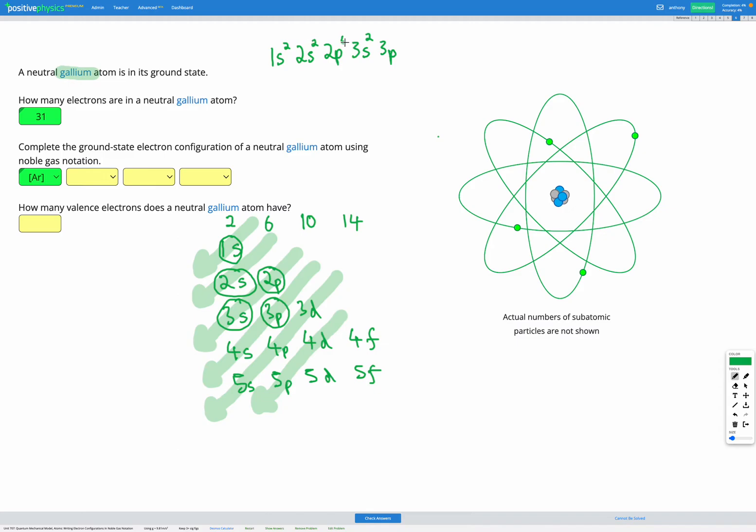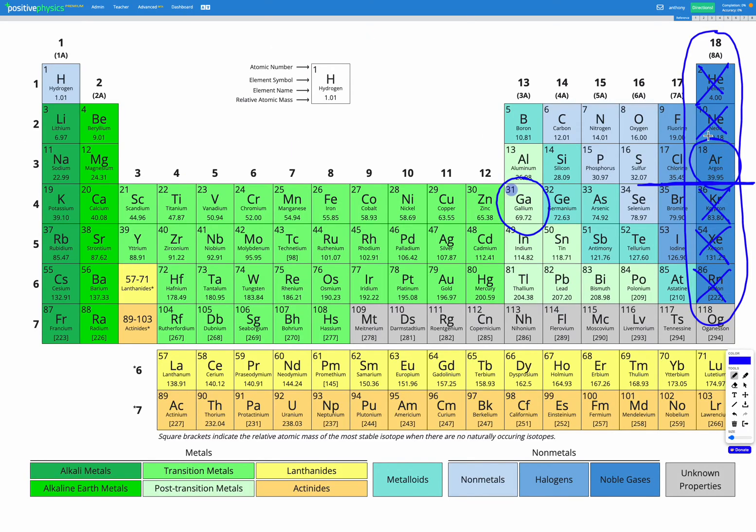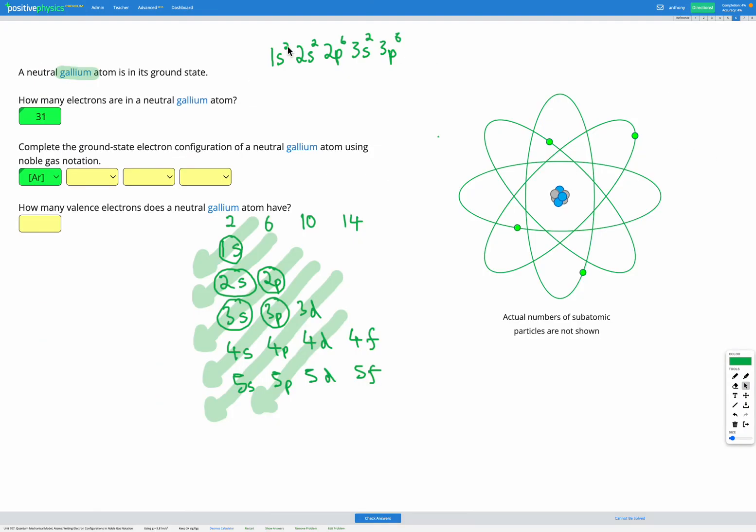And let's just check how many electrons we've used so far. 2 plus 2, that's 4, plus 6, that's 10, plus 2, that's 12. So we've got 12 electrons used up so far. We've got 31 total, so we're going to keep filling them. So 3p6. So far that's a total of 18 electrons used. Now let's just go back and check in our periodic table. Argon, that's the noble gas that we're using as our base, has 18 electrons. So we've actually just written out the electron configuration for argon. So let's just bear that in mind. That is the electron configuration for argon.